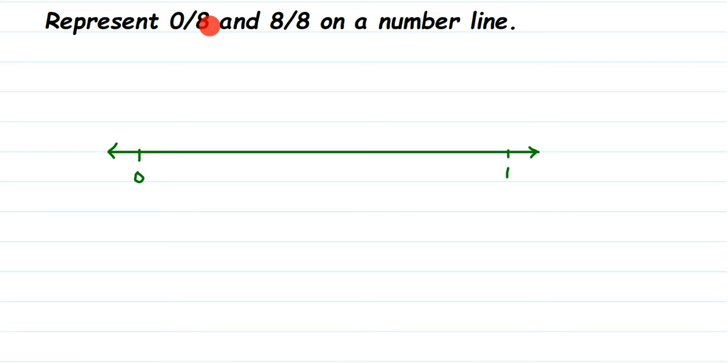numbers, then between each number - between 0 and 1, 1 and 2, 2 and 3, like that - you have to make 5 equal parts or 8 equal parts depending upon the denominator. Here I have 8 as the